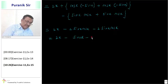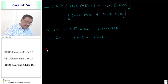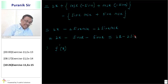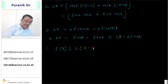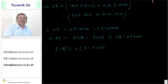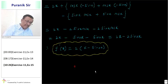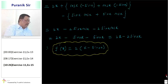This is equal to 2x minus 2 sin x cos x, which equals 2x minus sin 2x. Therefore, f dash x is equal to 2x minus sin 2x — taking 2 as common gives 2(x minus sin 2x). This is your final answer. That was problem number 15.